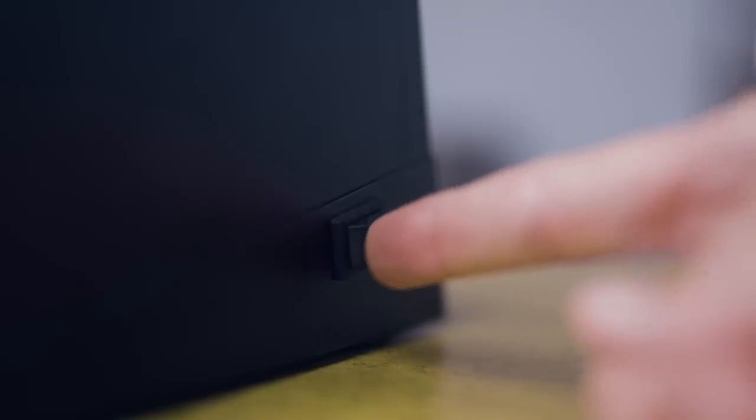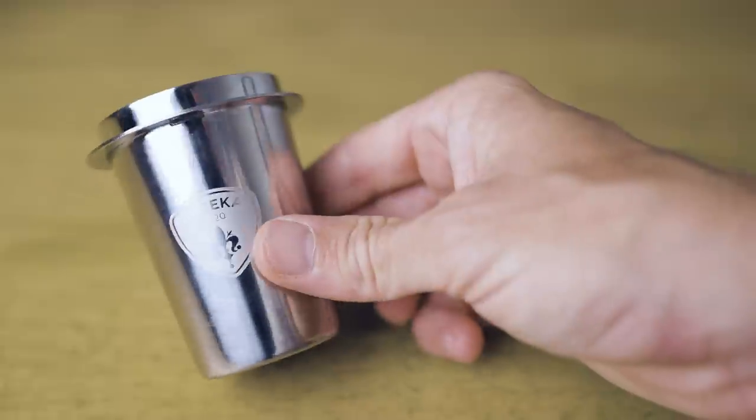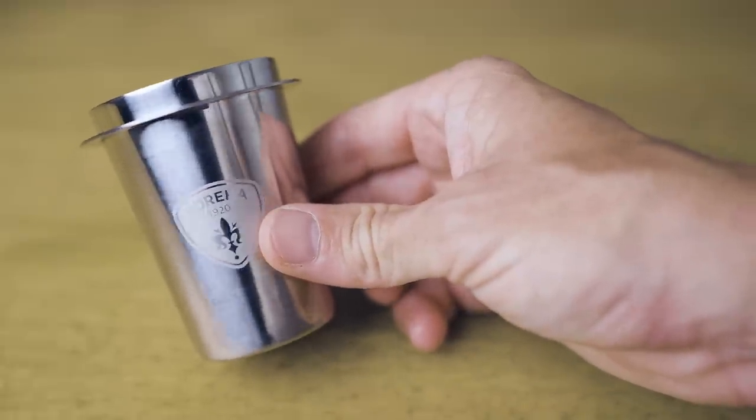To operate the grinder it's a simple on and off switch at the side of the grinder. This is a little bit stiff but at least you can't accidentally knock it on or off.